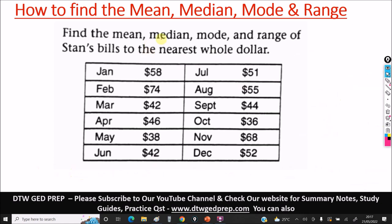Now let's find the median. To get the median, you first have to arrange the values from the lowest to the highest — the median is the middle value of the data set. The lowest value here is 36, so we start with 36. The next is 38, then 42. We have two 42s, so write down both 42s — don't miss any value just because it's repeated.